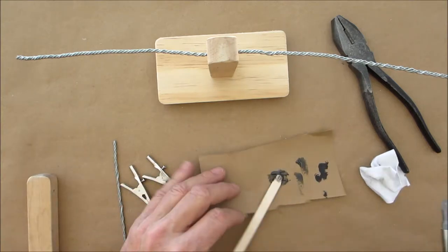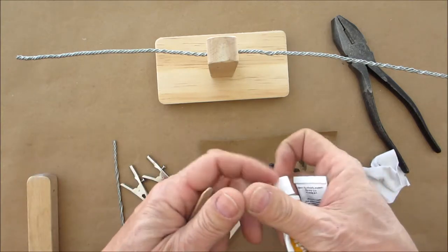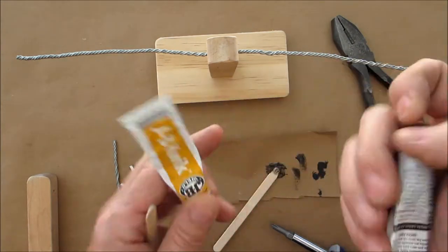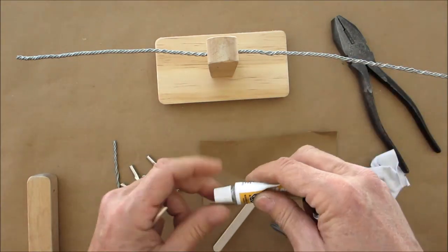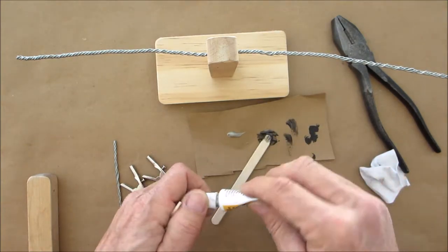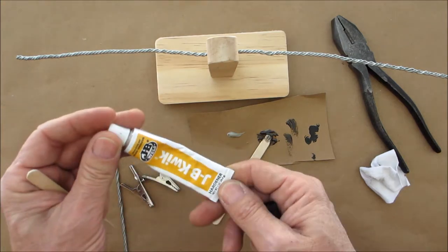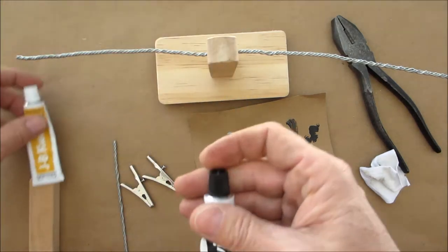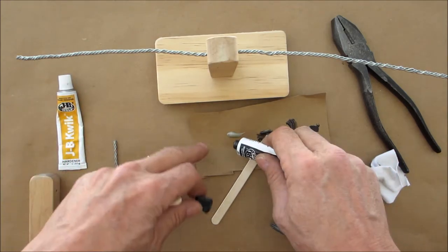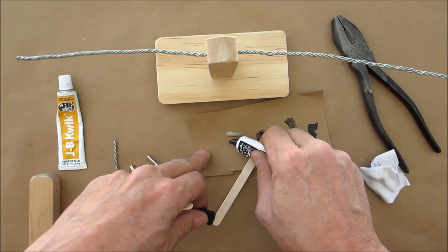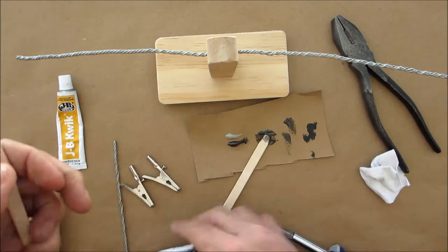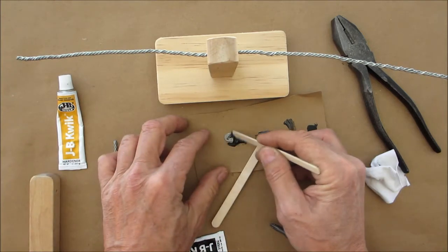So the next thing we're going to do is we're going to get ourselves a little JB Weld. This quick set JB Weld, this stuff is excellent. So we're just going to mix a little bit up, equal proportions of both the hardener and this is what they call the steel. Mix them up.